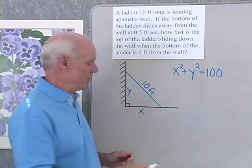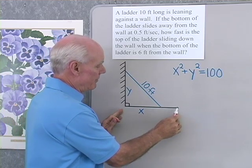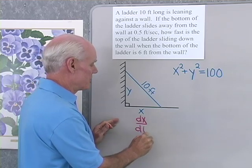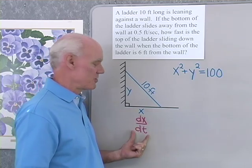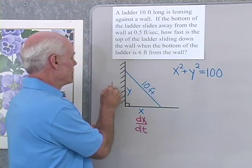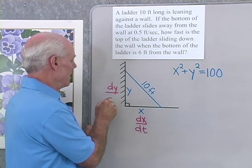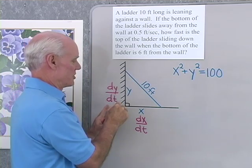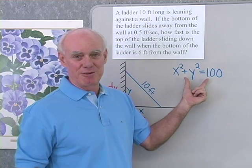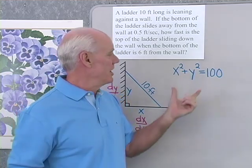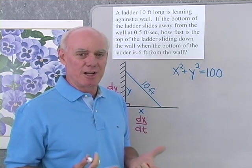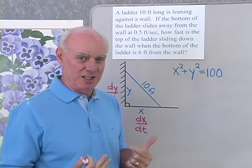With these related rate problems, the ladder is going to slide away from the wall in this direction, so that is going to be what we call dx/dt — the rate of change of this distance x with respect to time. Likewise, the ladder is going to be sliding down the wall at the same time, so dy/dt will be the rate of change of this distance with respect to time. We have a relationship between x, y, and 10 given by the Pythagorean theorem. All I need to do is differentiate this equation with respect to t implicitly, and I'll get a relationship between the two rates, dx/dt and dy/dt.